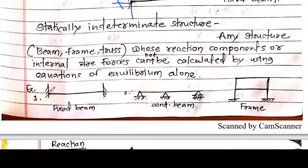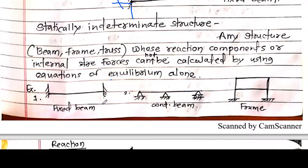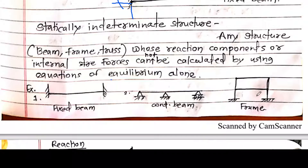Similarly, for this fixed beam, at the first fixed support there are 3 reactions, and at the second fixed support again 3 reactions — one vertical, one horizontal, and one moment each. So total reaction components for this fixed beam are 6. We have only 3 equations, so it is not possible to calculate all the reactions using equations of equilibrium. This is also an indeterminate structure.